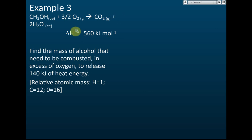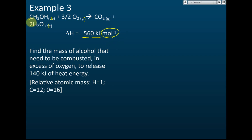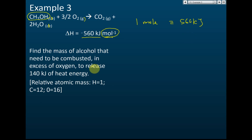Example three involves combustion. Alcohol — specifically methanol (CH₃OH) in liquid form — is combusted to produce gas. The heat of combustion is 560 kilojoules per mole, meaning when one mole of methanol burns, it produces 560 kilojoules of heat energy.